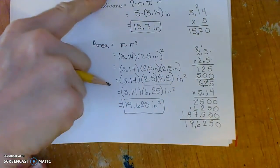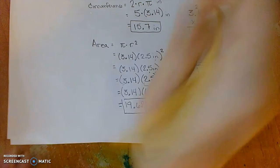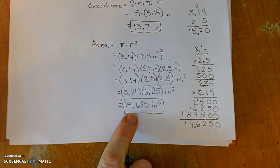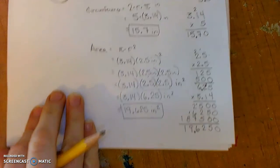So your diameter is 5 inches, circumference 15.7, and area 19.625 inches squared.